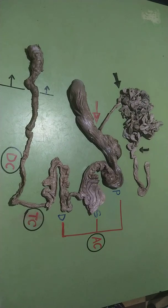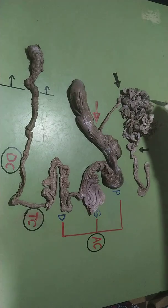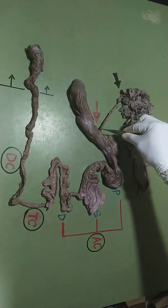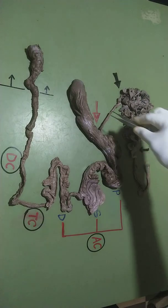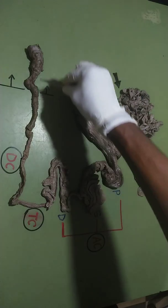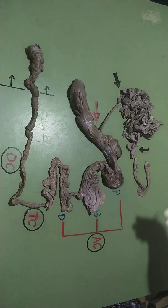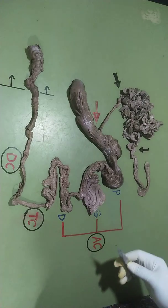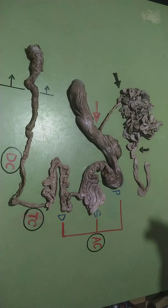The intestine is made up of two major parts: the small intestine and the large intestine. From this point down to this point is the small intestine, while from this point down to this point is the large intestine. The small intestine has three major parts, and the large intestine also has three major parts.